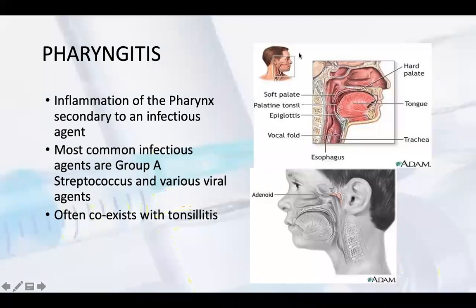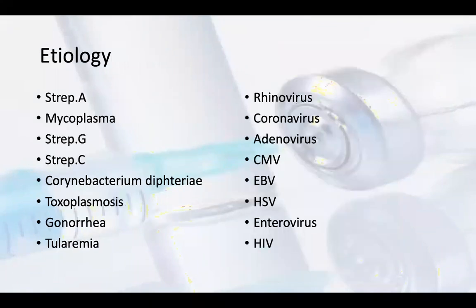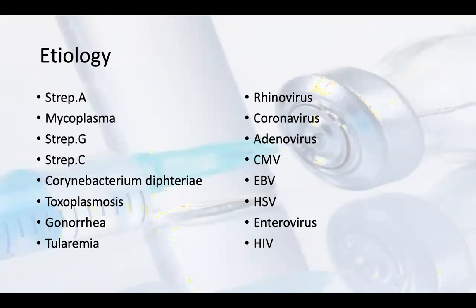Pharyngitis can also coexist with tonsillitis. The etiology includes Streptococcus A, Streptococcus C, Mycoplasma, Corynebacterium diphtheria, toxoplasmosis, gonorrhea, tularemia, rhinovirus, adenovirus, CMV virus, EB virus, HSV virus, and enterovirus including HIV. These may cause pharyngitis.